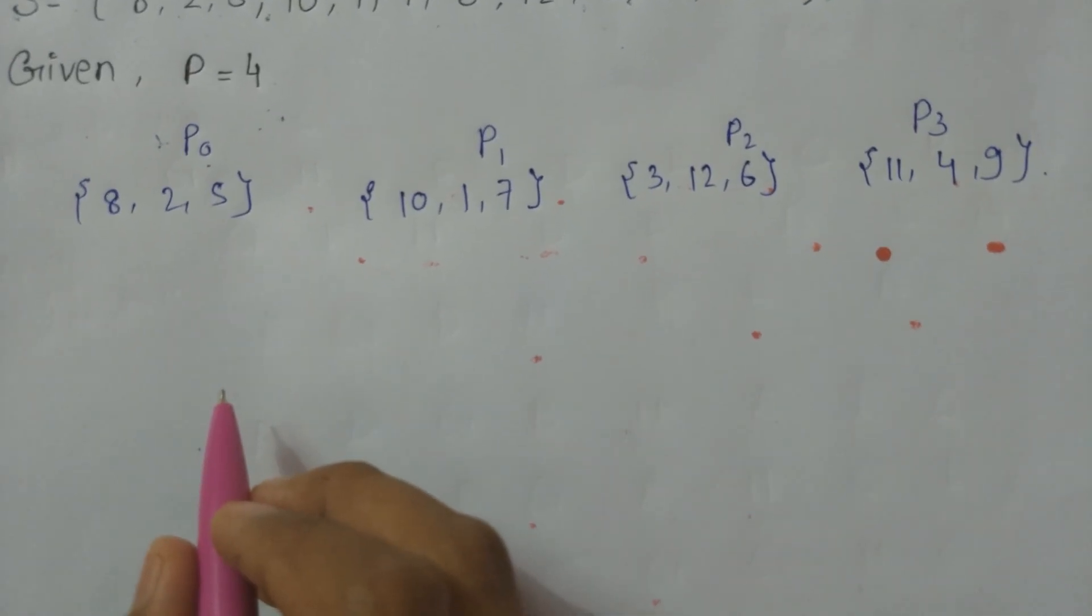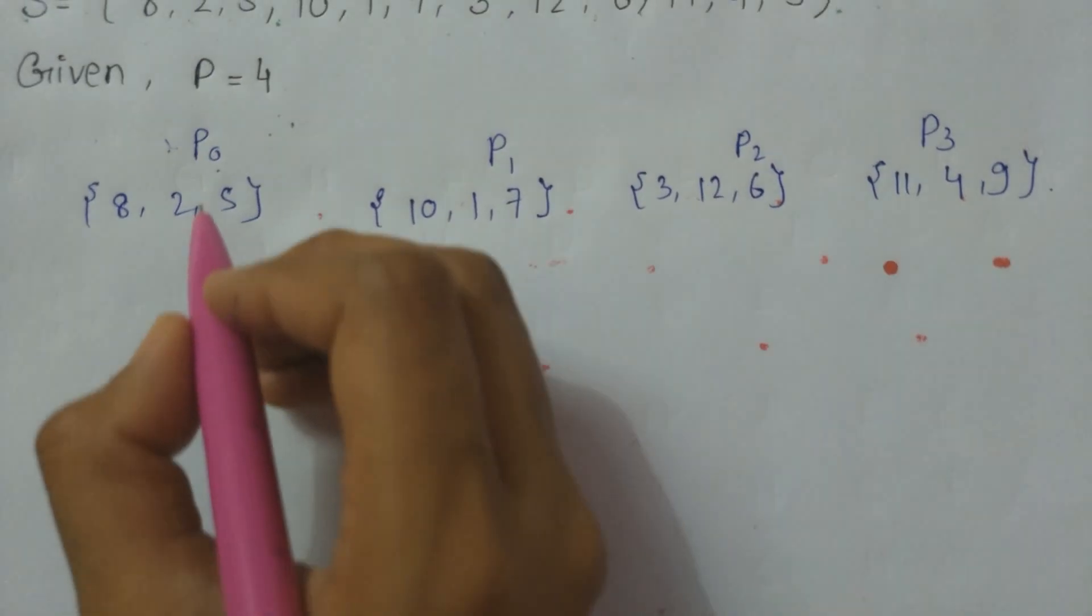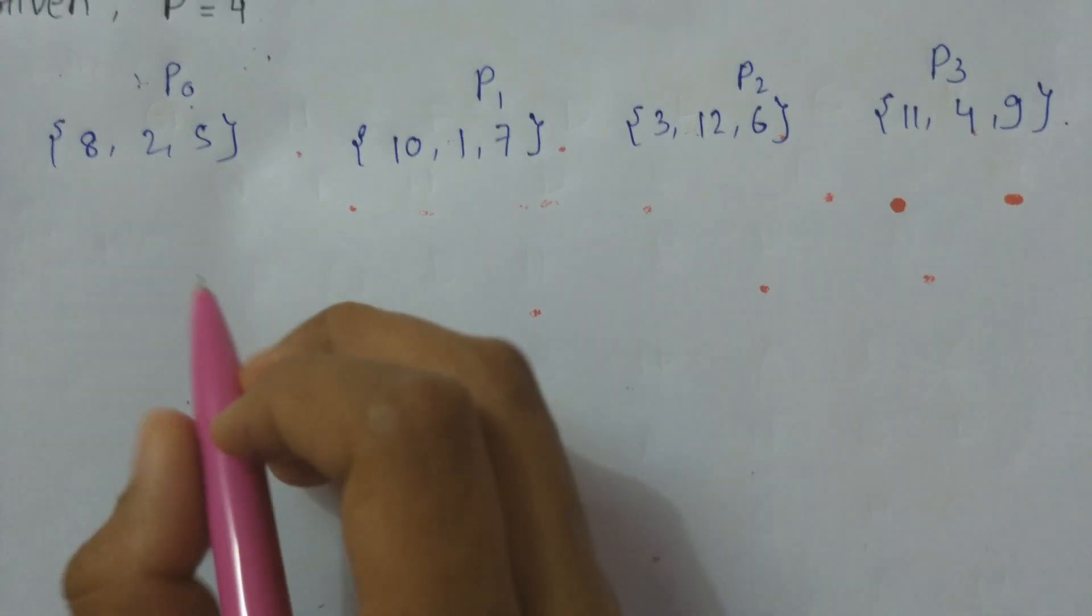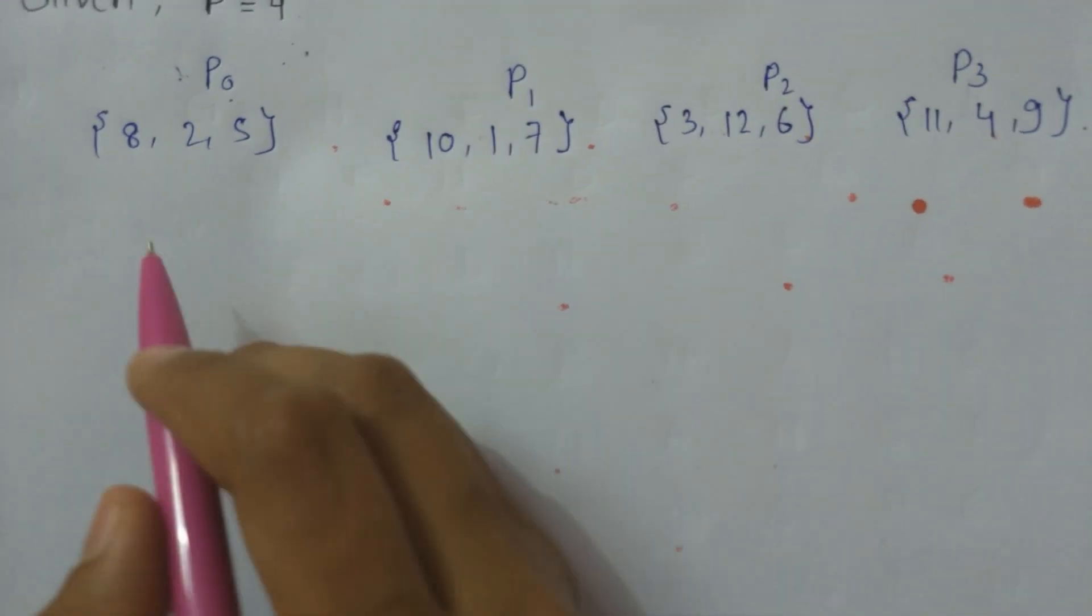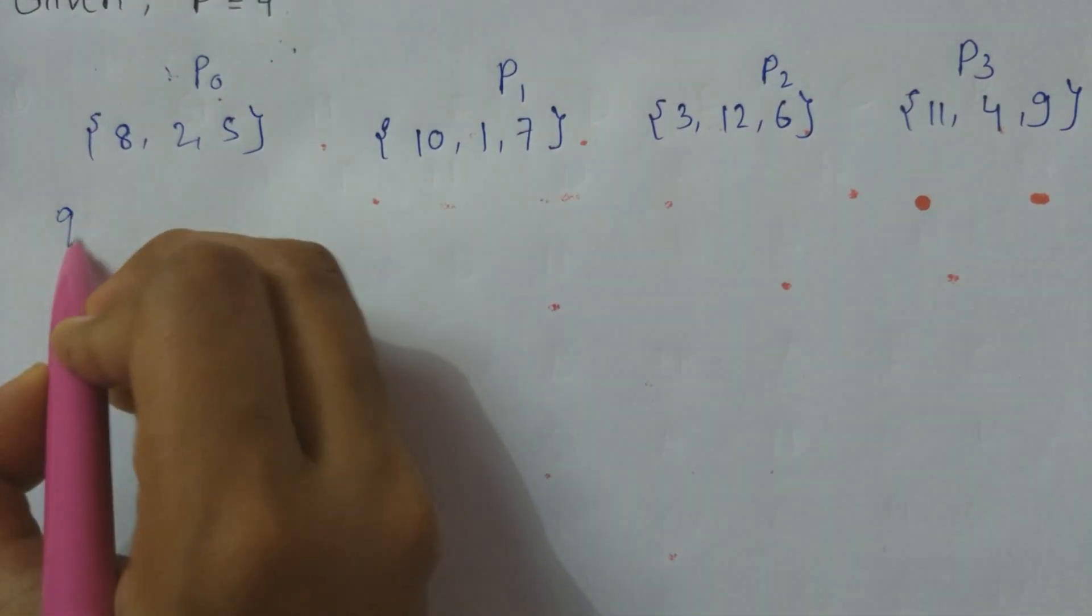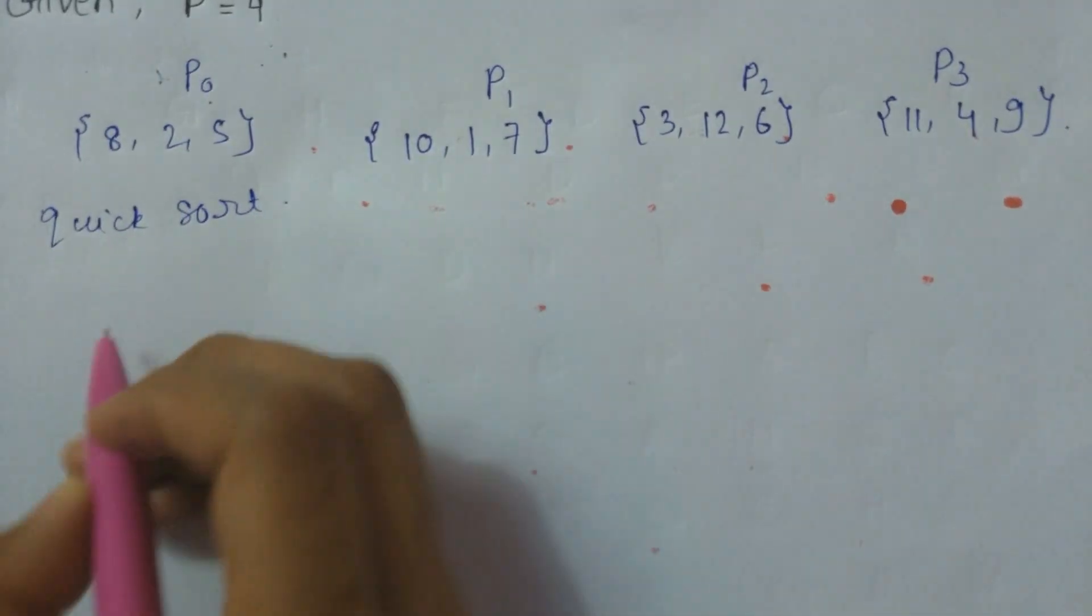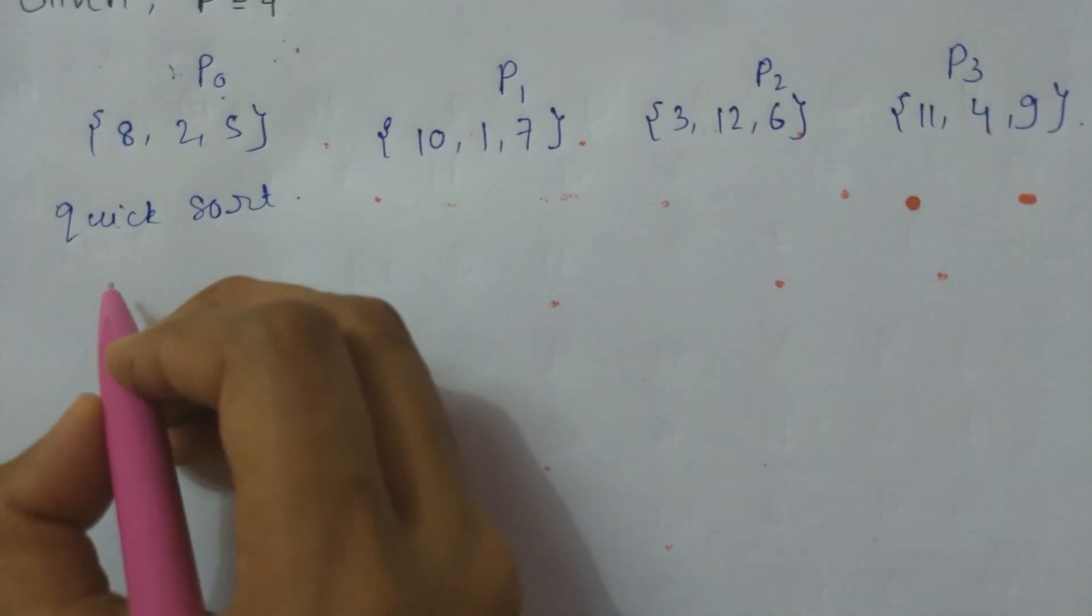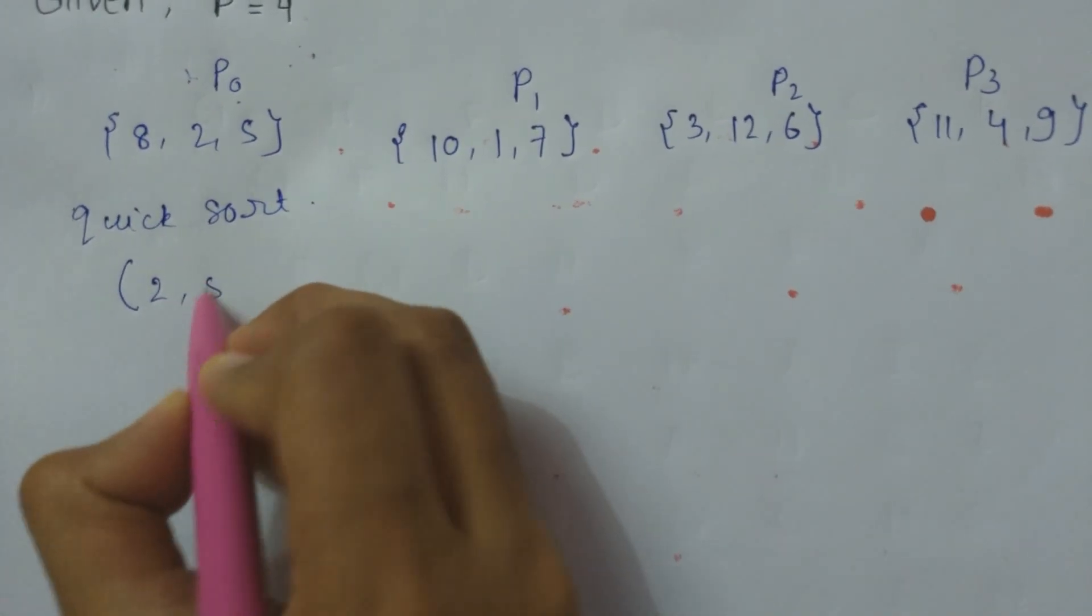We will firstly arrange the partitions by applying quick sort on it. So we will perform quick sort over here. It is very simple: given 8, 2, 5 we will write 2, 5, 8 over here.